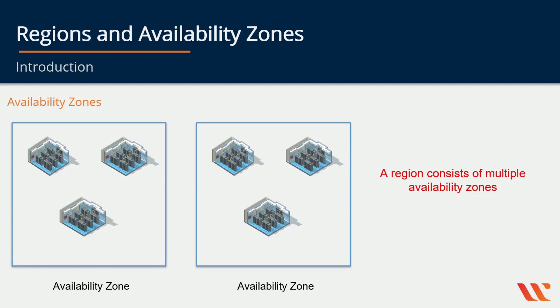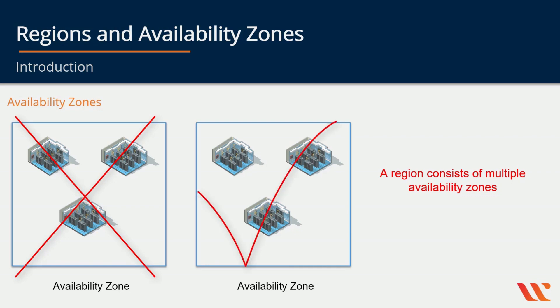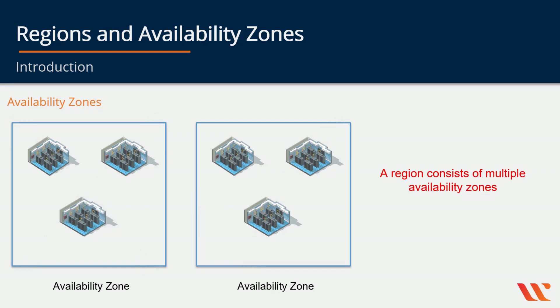The reason they have multiple availability zones is so that you as the customer can make use of them to enable high availability for your application. For example, if the set of data centers in one availability zone goes down, and your application infrastructure is running off a secondary availability zone, then your application will still be up and running, even though one availability zone goes down.